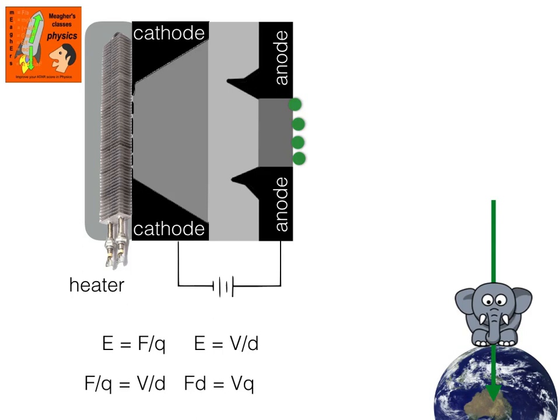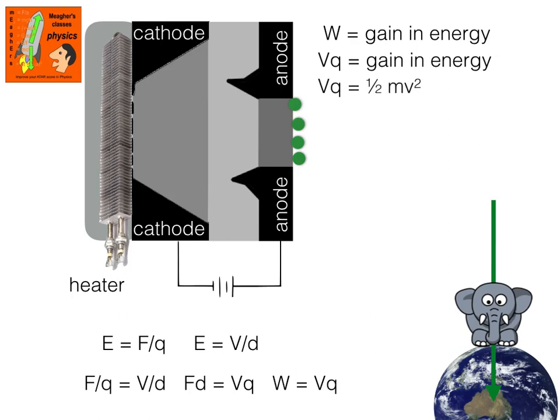Now when we go back to year 10 type work, work is force times displacement. Well we've got that there, Fd equals Vq. So we can now say that the work done on those charges is equivalent to the potential difference between the plates multiplied by the charge. So the work done is the gain in energy. We've just determined that the work done is Vq. Now what energy do these charges gain? They gain kinetic energy. They're leaving this electron gun at quite a high velocity. So we can say that Vq is equivalent to half mv squared in this situation.